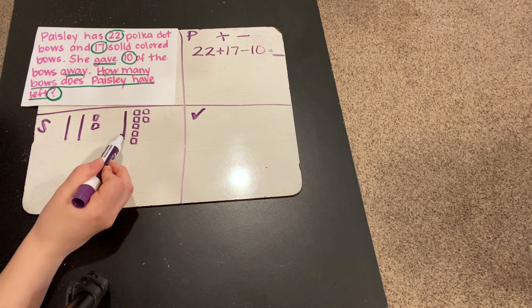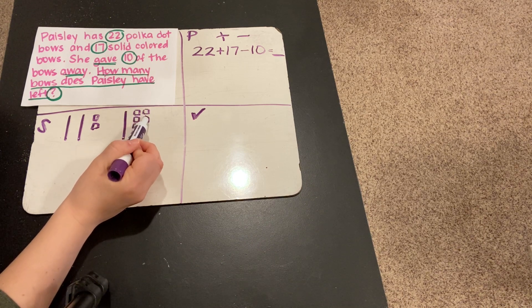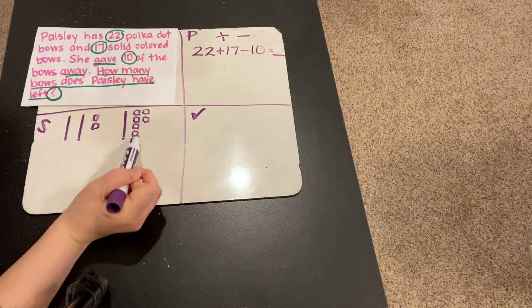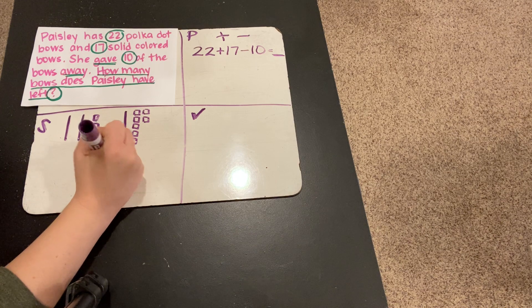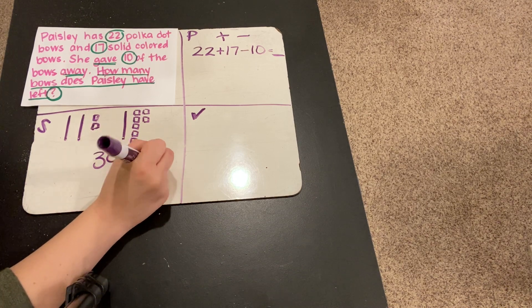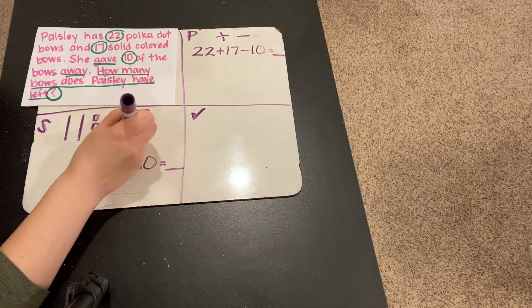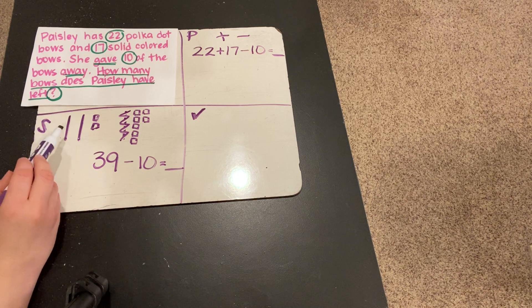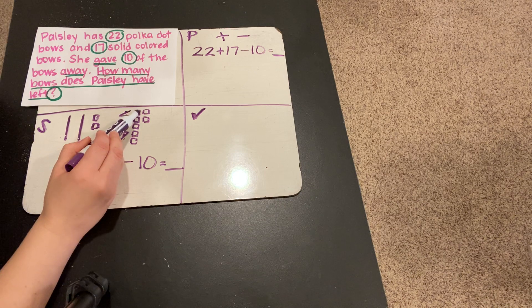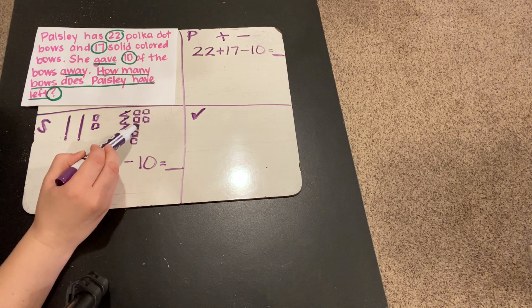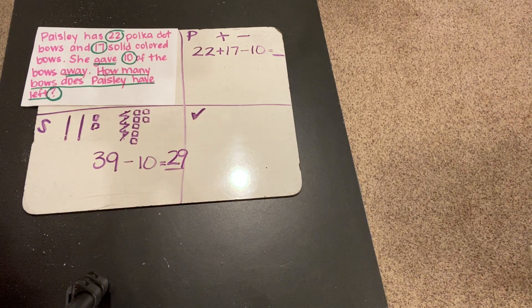10, 20, 30, 31, 32, 33, 34, 35, 36, 37, 38, 39. Okay, so we have 39 here. Now, we need to take away the 10. So, we'll just take away the 10. Now, let's see what we have left. 10, 20, 21, 22, 23, 24, 25, 26, 27, 28, 29. So, it looks like 39 minus 10 equals 29.